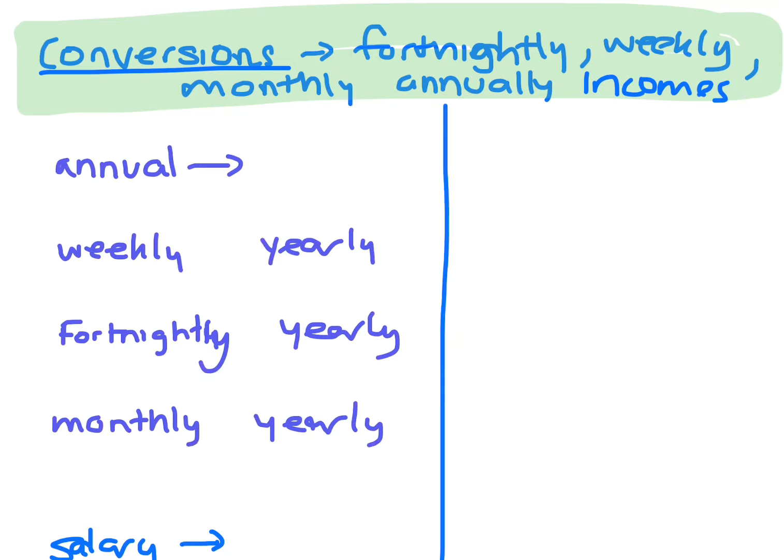Alright, so annual actually just means a year and also PA means per annum. So per annum is for a year, just in case you see that language.